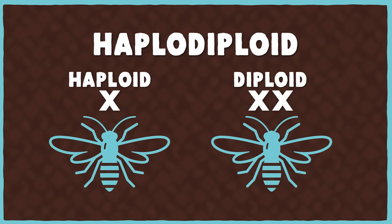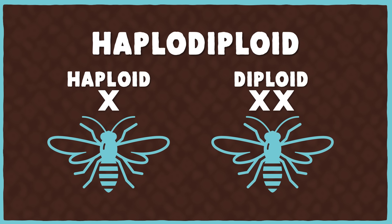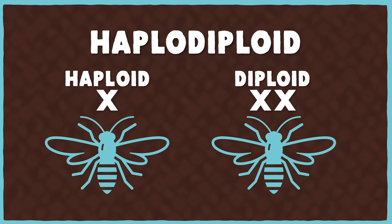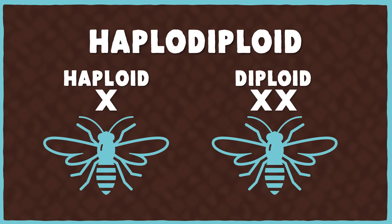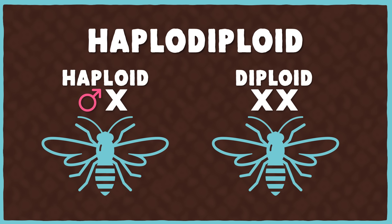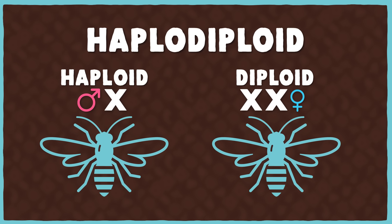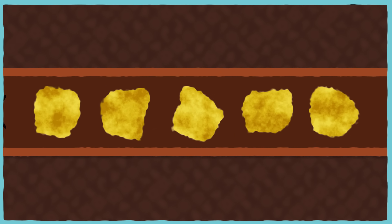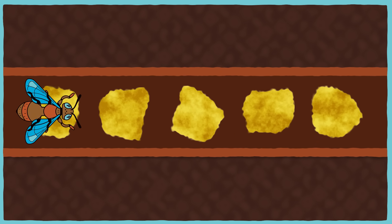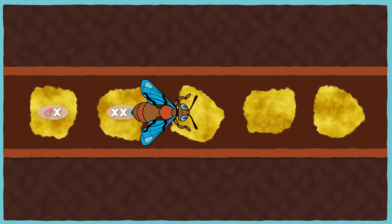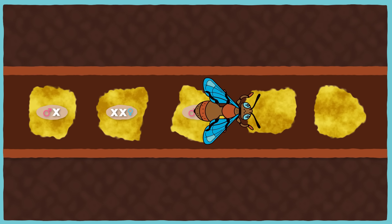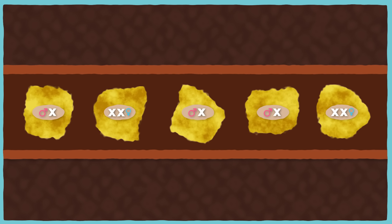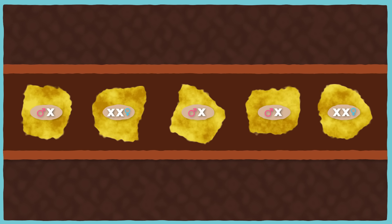For haplodiploid animals, some individuals can have two copies of every chromosome, and some can have only one. And in Hymenopterans, this is also related to sex determination. Haploid individuals are male, and diploid individuals are female, with some rare exceptions. This means that a female bee can choose what sex each of her offspring will be. Lay an unfertilized egg? It'll be male. Use some of that stored sperm from mating to lay a fertilized egg? That will be female.